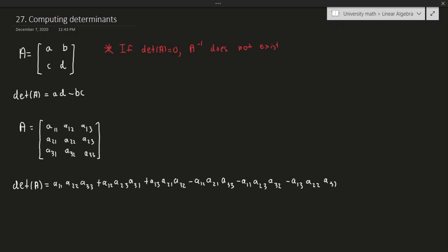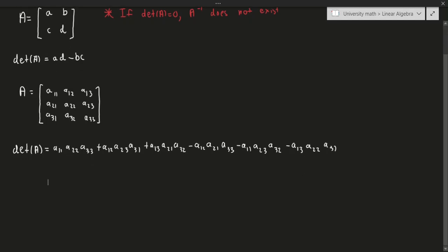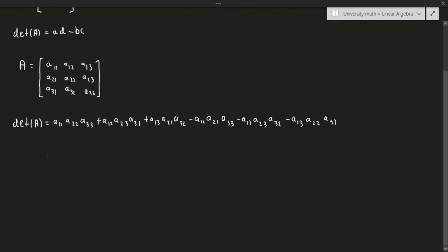Now you might be thinking, how am I going to memorize this massive formula? You could, but there's a much more nicer way to memorize or at least derive this formula. This is known as the rule of Sarrus, but I'm not going to use the actual name — I'll talk about more of the algorithm. So how do we compute the determinant of a 3x3 matrix?